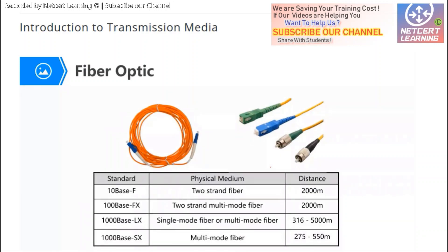The next medium is optical fiber. Optical fiber is also widely used nowadays, and it can support higher speeds than twisted pair — such as 100 Mbps, 1 Gbps, 10 Gbps, 40 Gbps, and 100 Gbps. All these speeds can be supported by optical fiber.